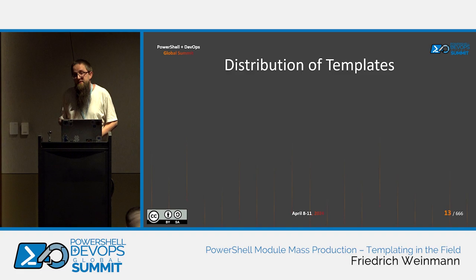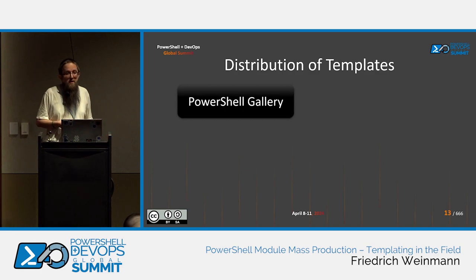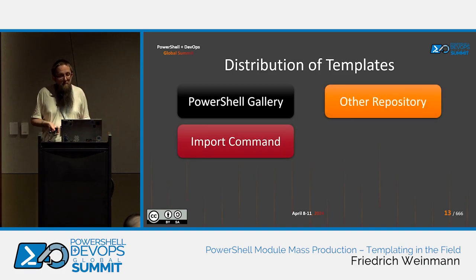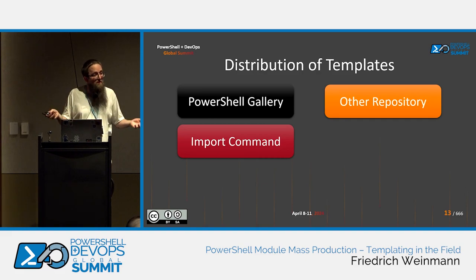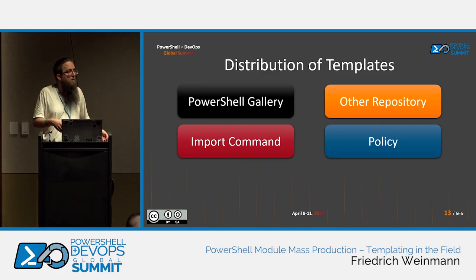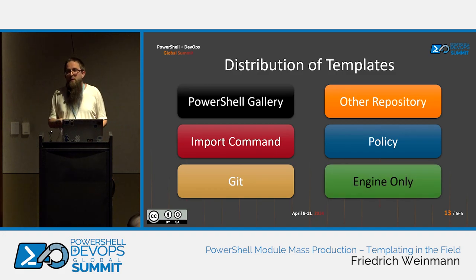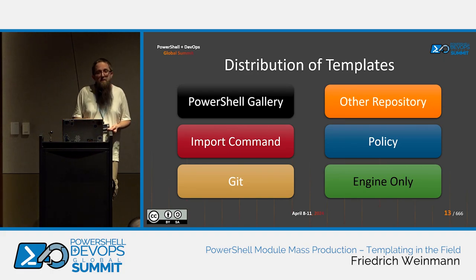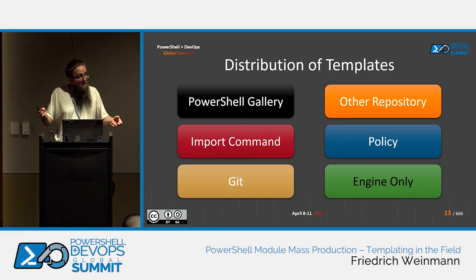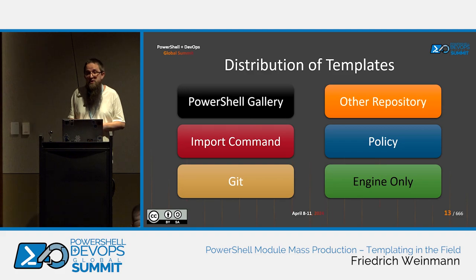Another consideration we often don't think about is: how do I get the templates to where they need to be? Can I deploy my templates through the PowerShell Gallery or an internal repository? Do I have to explicitly import them into a bootstrap file to get a co-worker working, or can I simply deploy them by policy so that a new worker is onboarded and has immediate access to everything? Can I place templates in Git, or am I forced to place them in the engine itself only? That last option could actually be useful when you only want specific people writing and controlling templates.